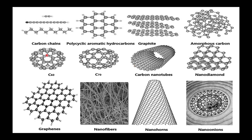Next is the carbon chain. We can see various carbon allotropes: hydrocarbons, graphite, amorphous carbon, C60, and C70. What we are specifically interested in is the carbon nanotube structure. Other forms include nano diamond, which has a diamond-structure-based formation, nanofibers, graphene, and nanohorns.